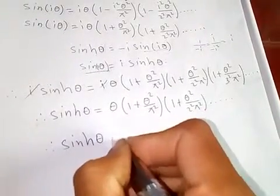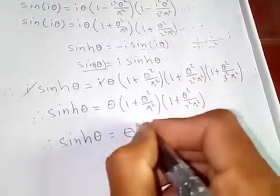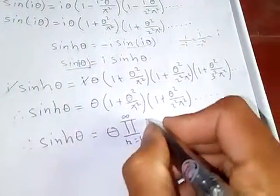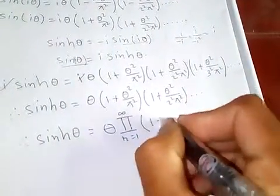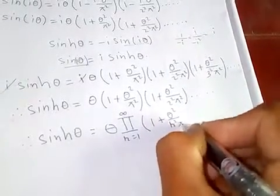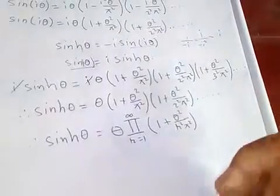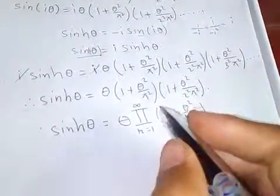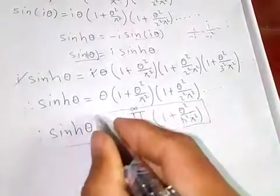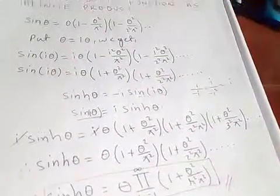Therefore, sinh(theta) equals theta times the product from r equals 1 to infinity of (1 plus theta squared over r squared pi squared). Thank you.